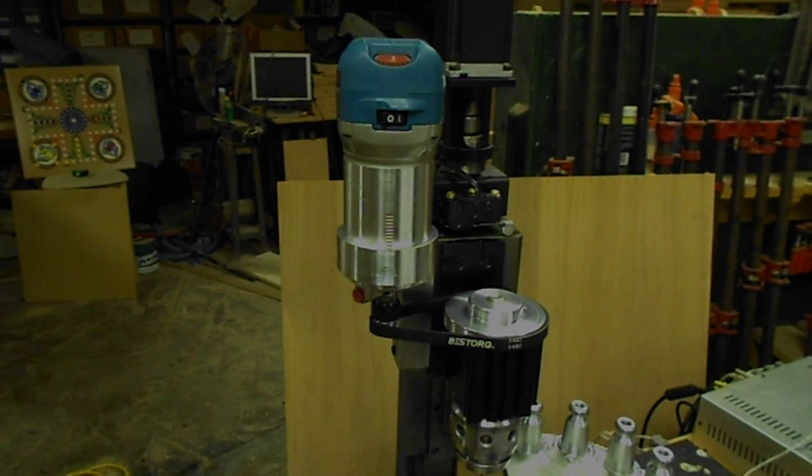I went ahead and replaced the original motor of the TAG with this Makita variable speed trim router. The original motor was a little over 12 pounds and this trim router is just under 4 pounds, so we've reduced the weight quite a bit in the process.